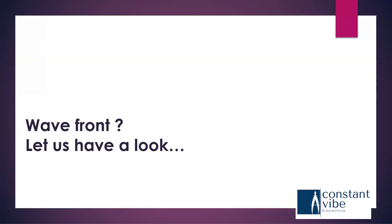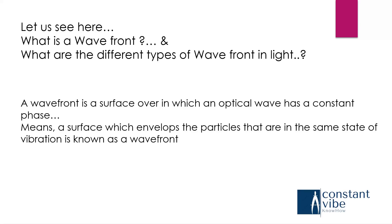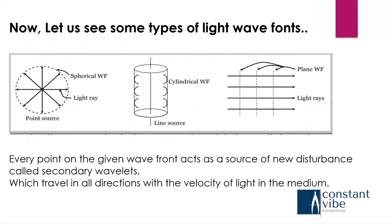Let us have a look at what is a wavefront. I am going to explain what is a wavefront and how it will be developing. A wavefront is a surface in which an optical wave has a constant phase. That means a surface which envelops the particles that are in the same state of vibration is known as a wavefront. You can see here in this picture some types of wavefront.